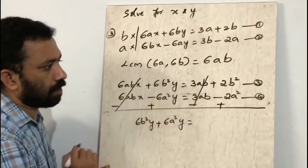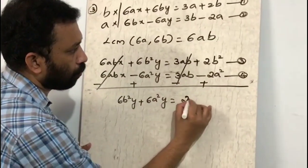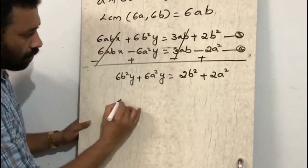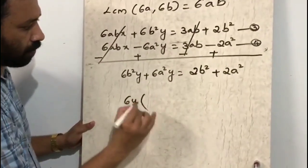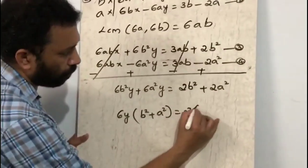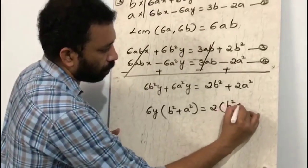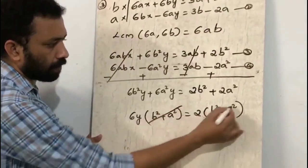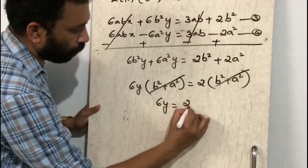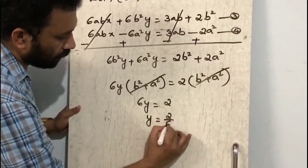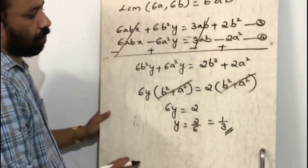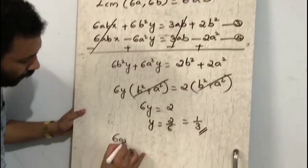After subtracting the equations and simplifying, we get 6b²y + 6a²y = 2(b² + a²), so 6y(b² + a²) = 2(b² + a²). Dividing both sides by (b² + a²): 6y = 2, therefore y = 2/6 = 1/3.